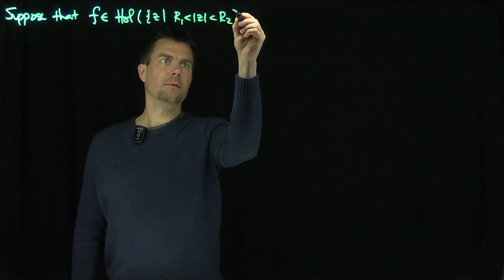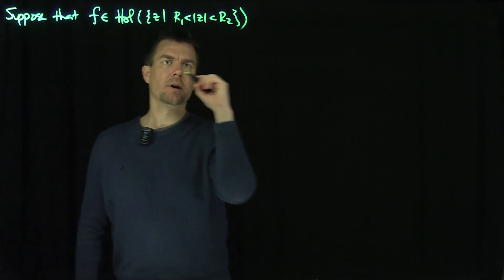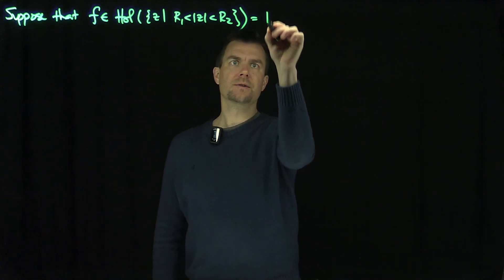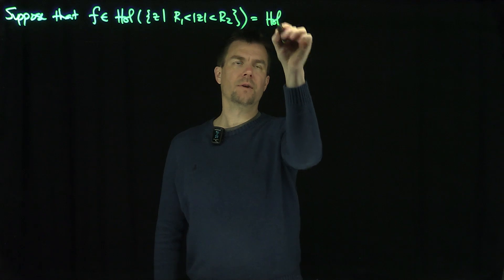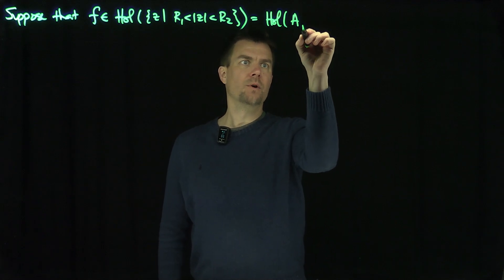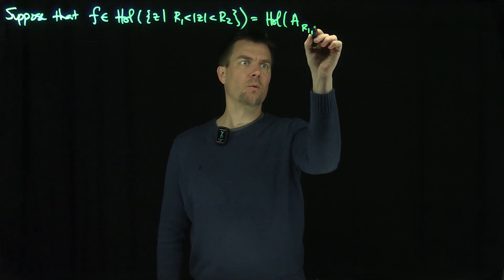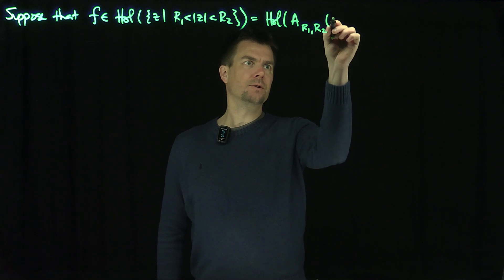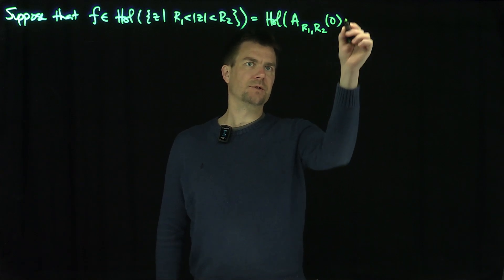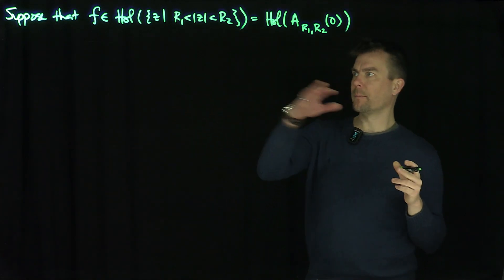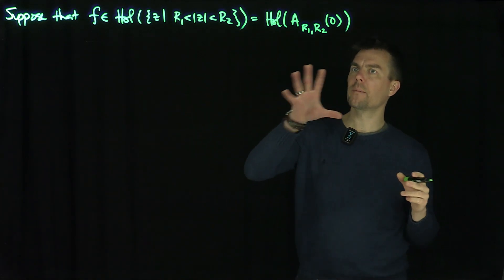So that's an annulus. I'm going to make up some notation for this: F is holomorphic on the annulus with inner radius R1, outer radius R2, and centered at 0. I'm going to do everything at 0, so I'm going to keep putting zeros everywhere.